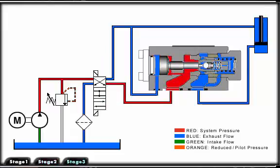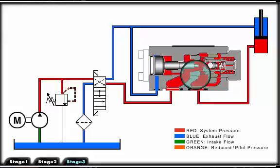To extend the cylinder, the check valve allows fluid to flow freely in one direction and blocks flow in the opposite direction.